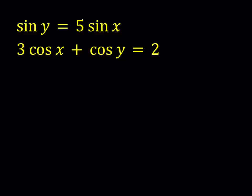We're going to start with the second equation. I'm going to isolate cosine of y. The reason for that is I'd like to square both sides, but before I do, I would like to isolate it first. So the second equation can be written as cosine y equals 2 minus 3 cosine x.